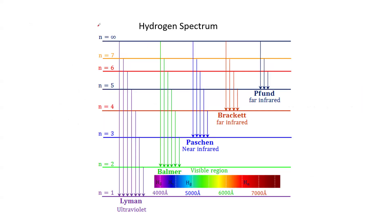In the hydrogen spectrum, we have the following series: N1 corresponds to the Lyman series, which is under ultraviolet light. Then we have the Balmer series, which is in the visible region. We have the Paschen series, which is near infrared. Then we have the Brackett series and the Pfund series. These are the different series of the hydrogen spectrum, and each series has its own name.